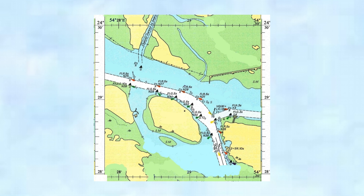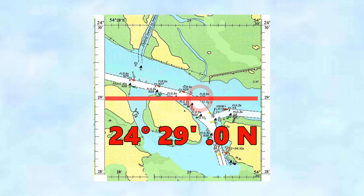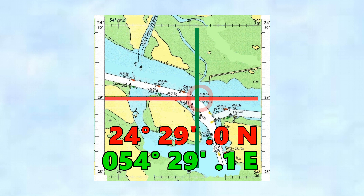Now let's have some points of land or points of interest. What is this navigation buoy here? See if you can work this one out yourself. Here's the latitude line we've put on. What is the latitude of that buoy? 24 degrees, 29 minutes, 0.0 north. Now what's the longitude? Longitude is 054 degrees, 29.1 minutes east.